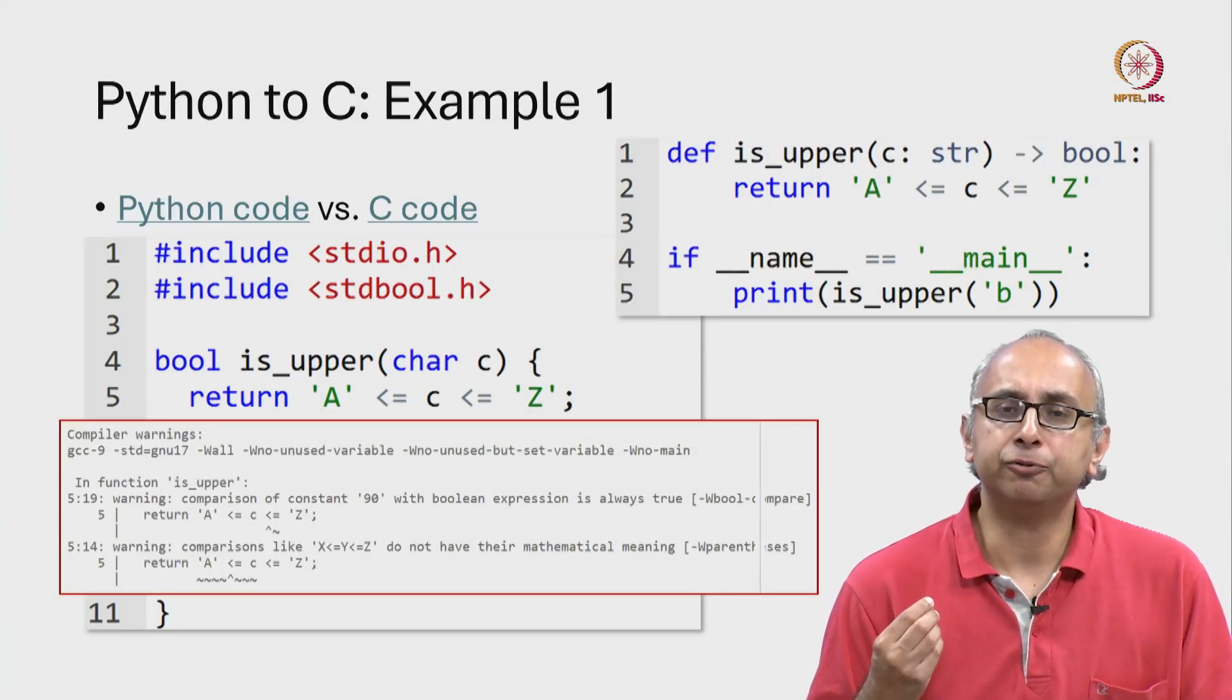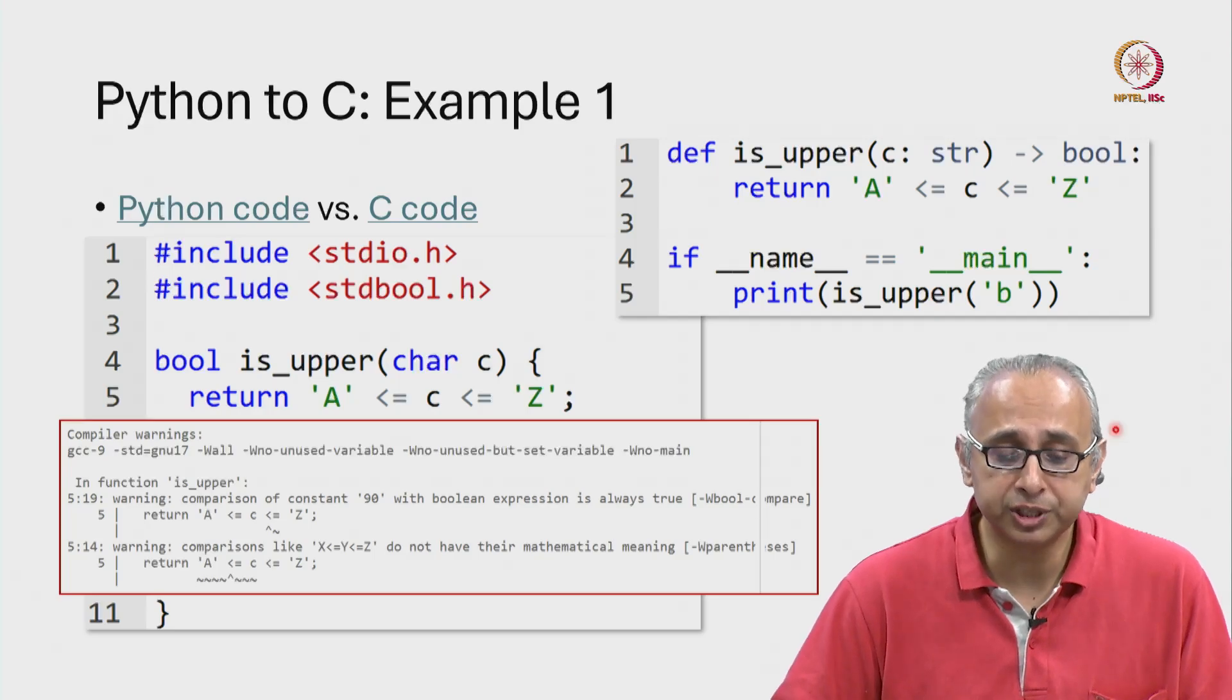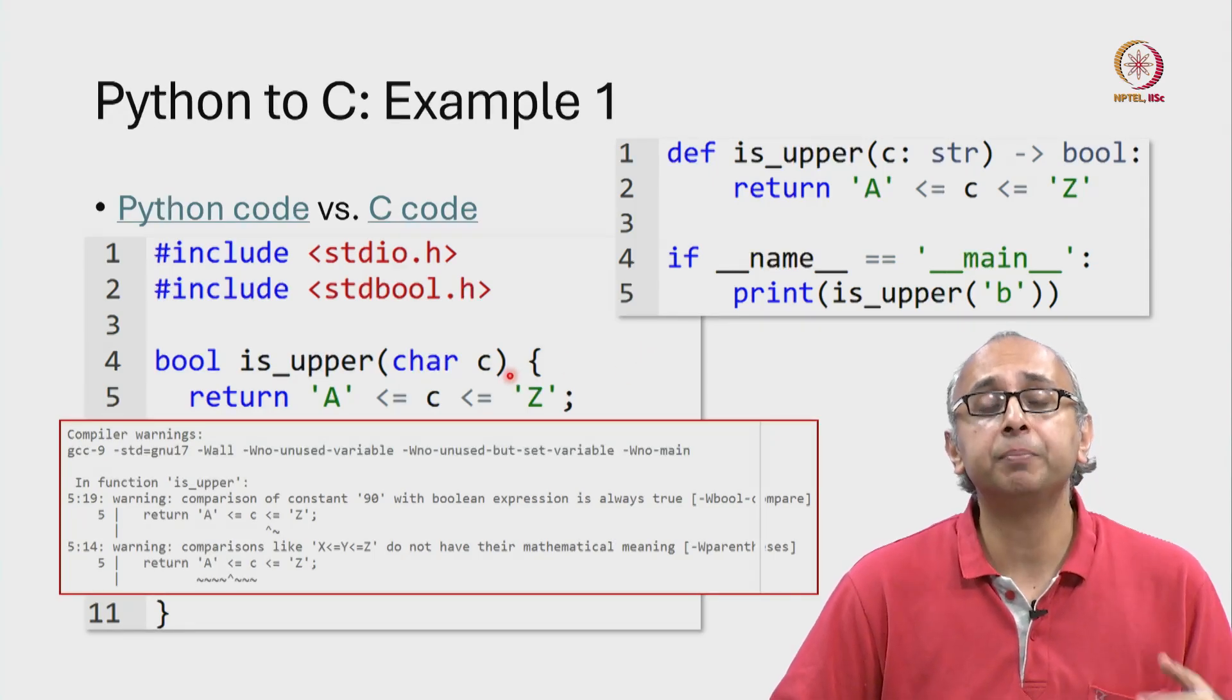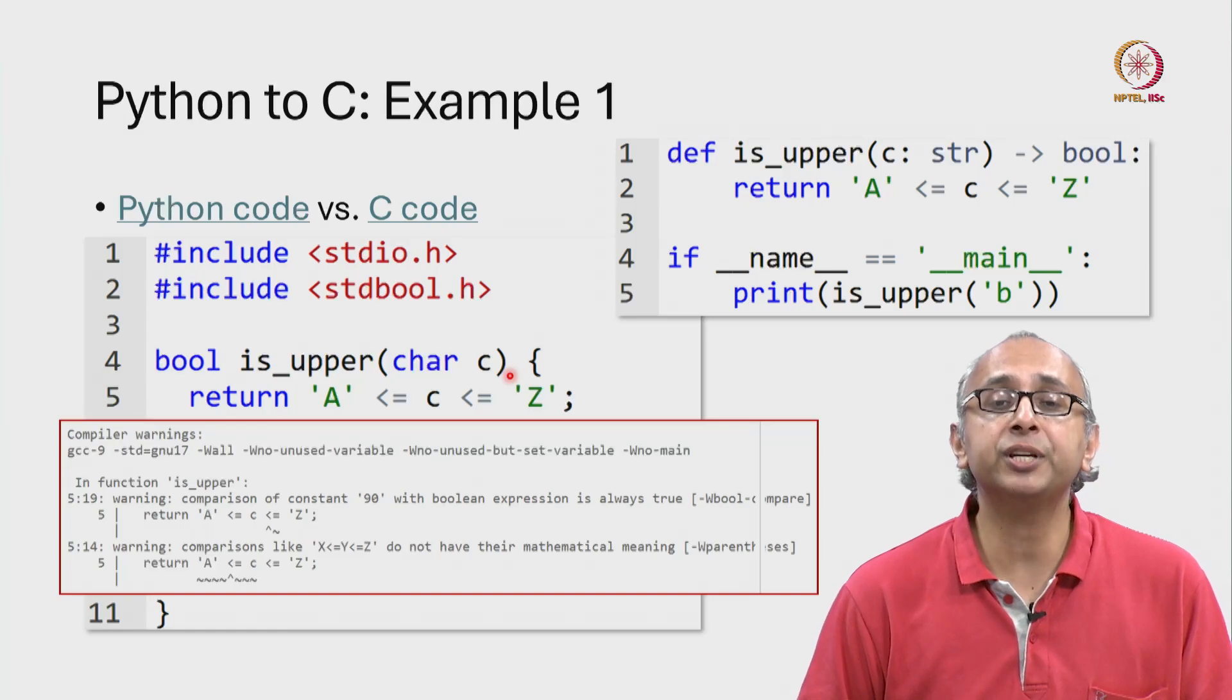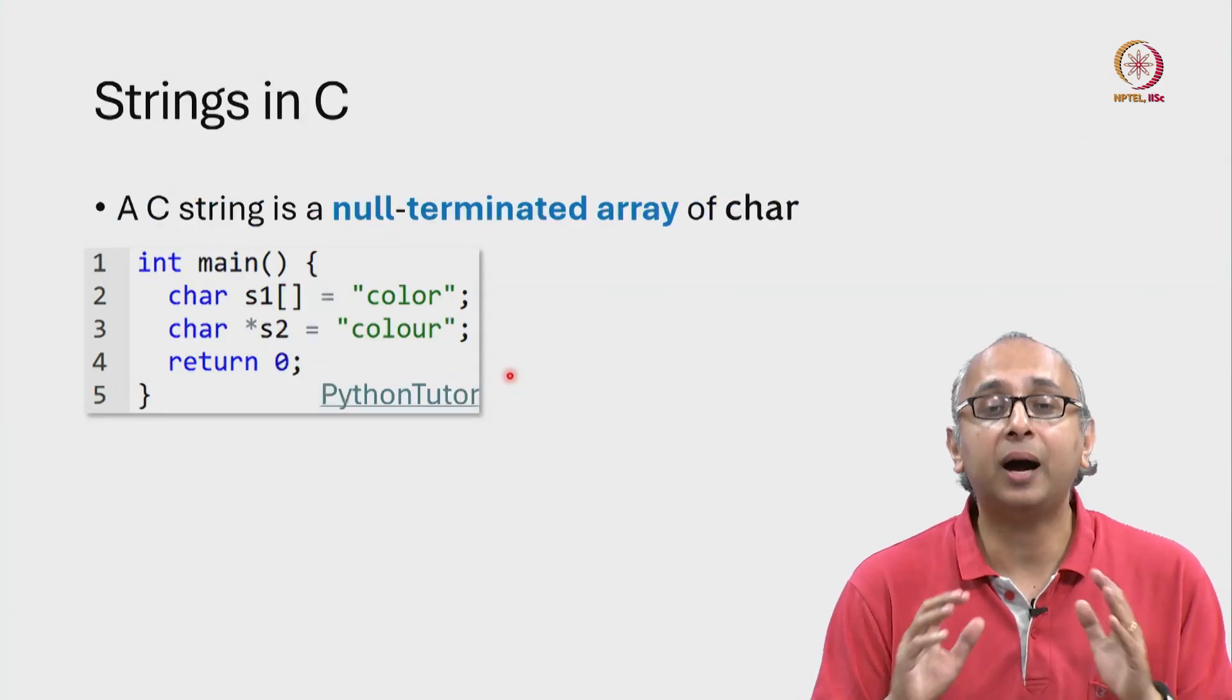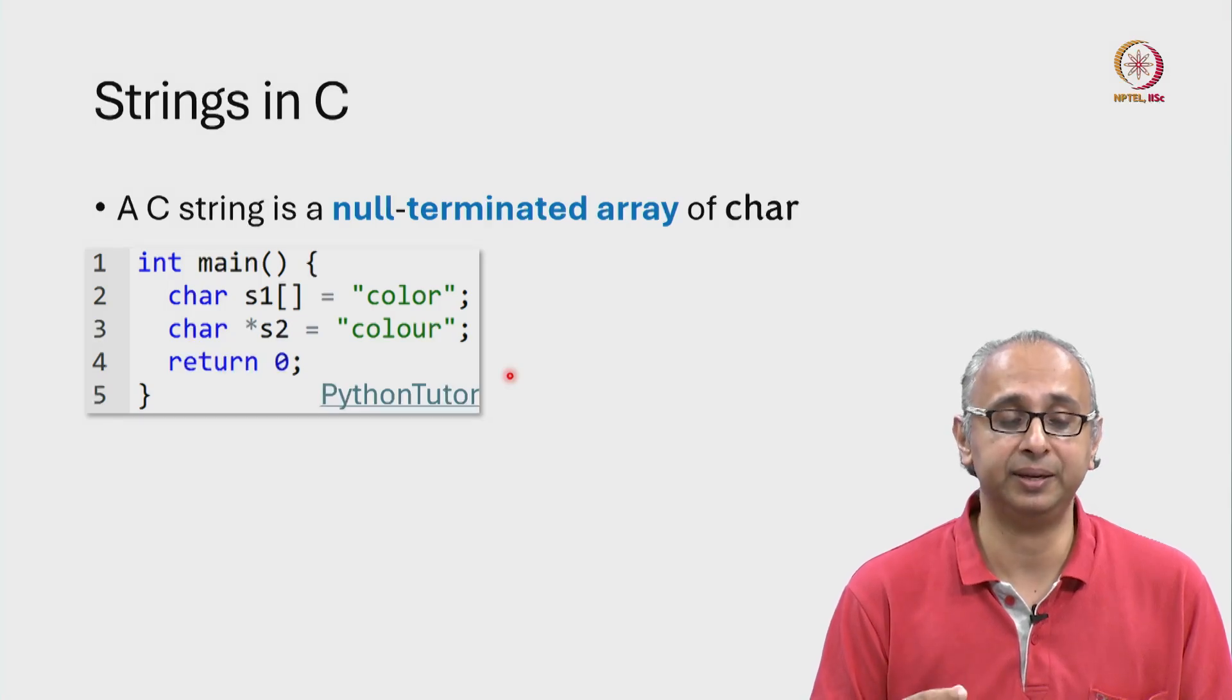Let's now try to write a function that takes an argument that is not just a single character but a string. So in order to do that, we first have to understand how strings are represented in the C programming language.